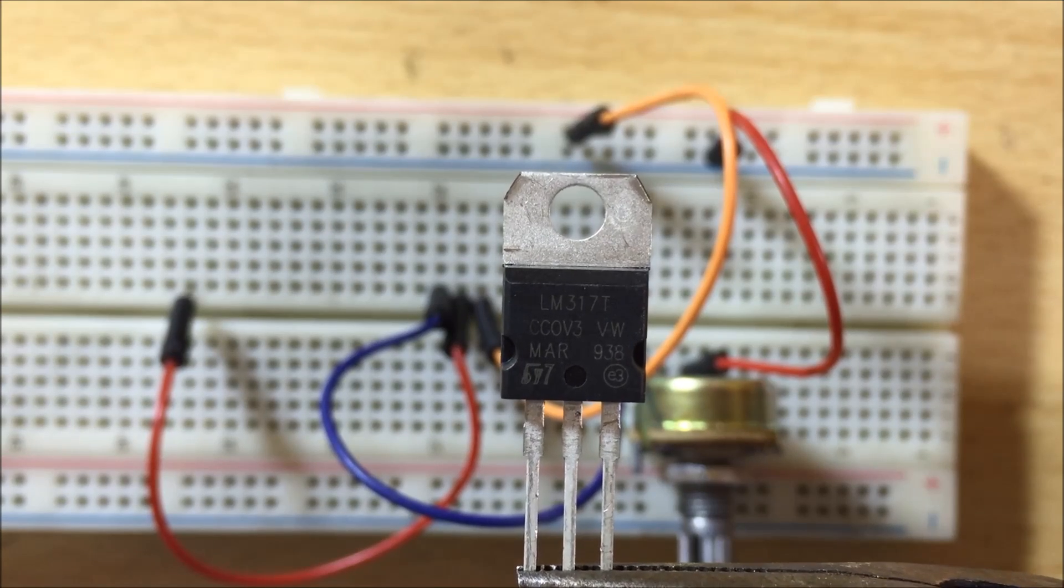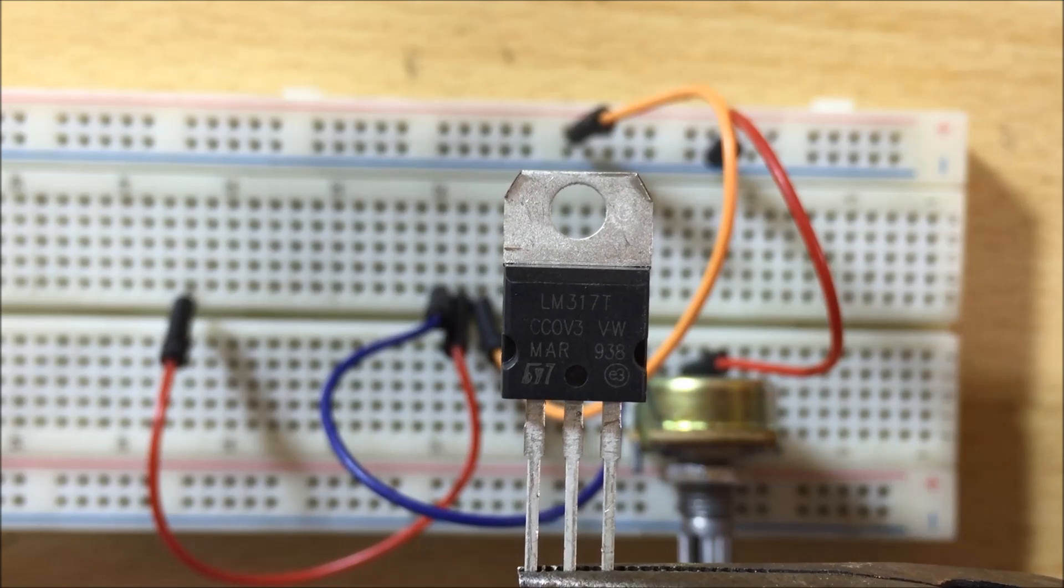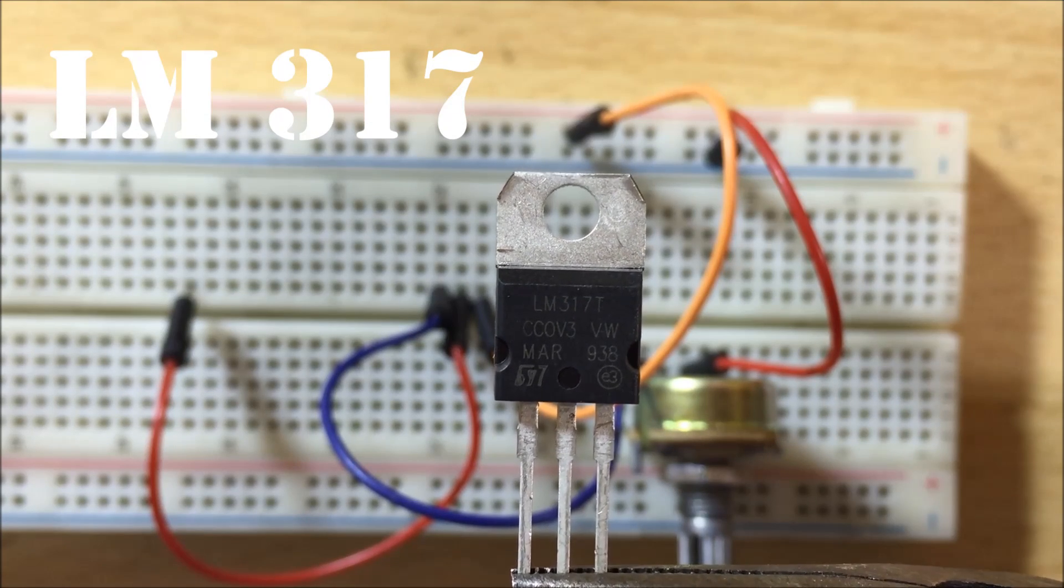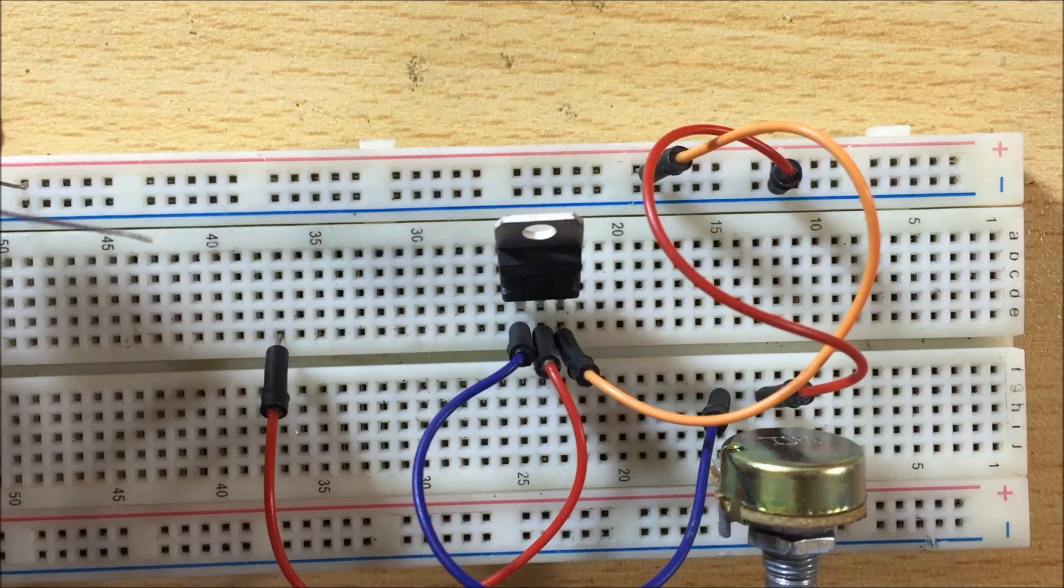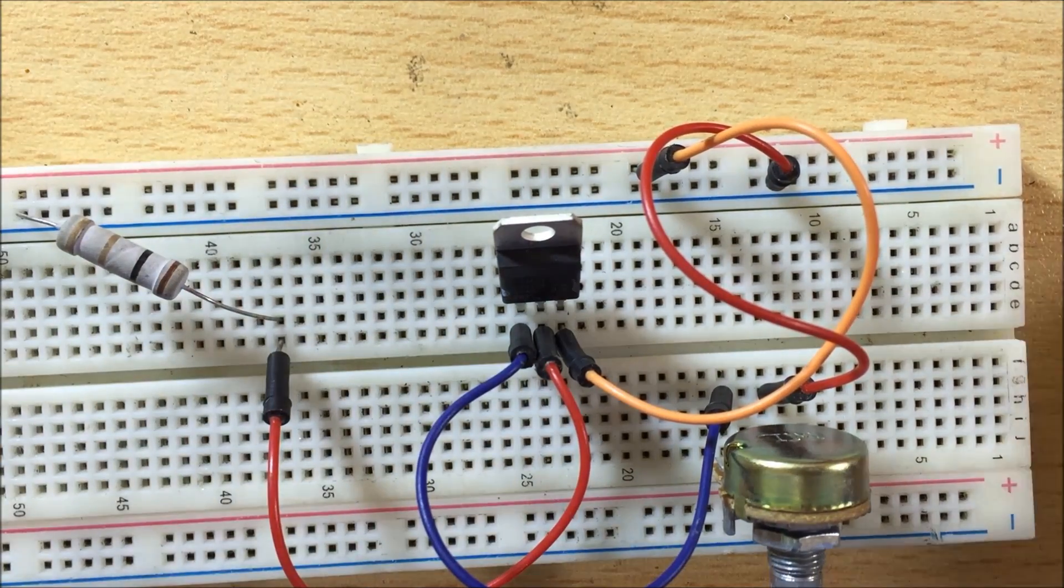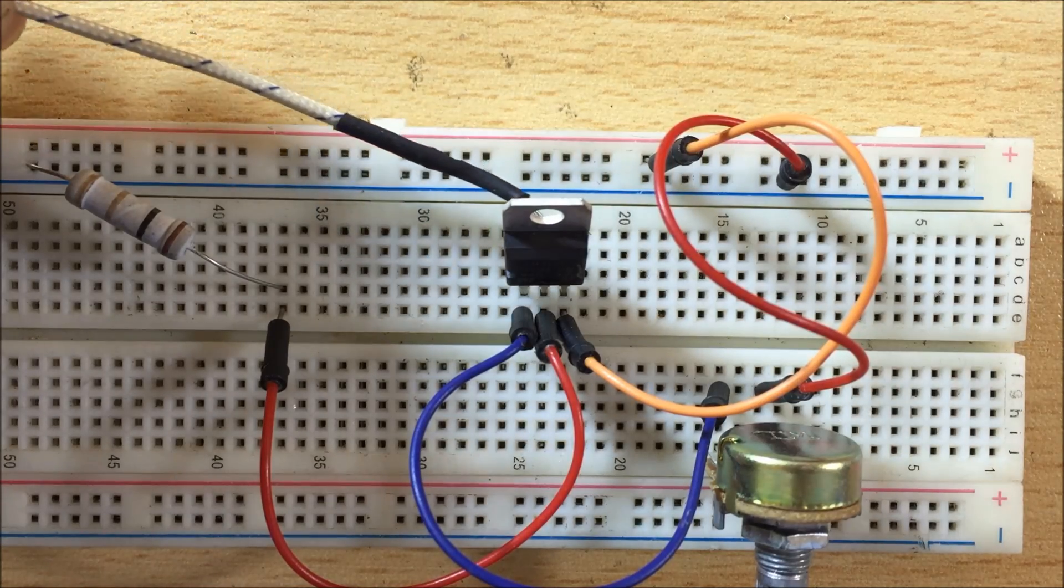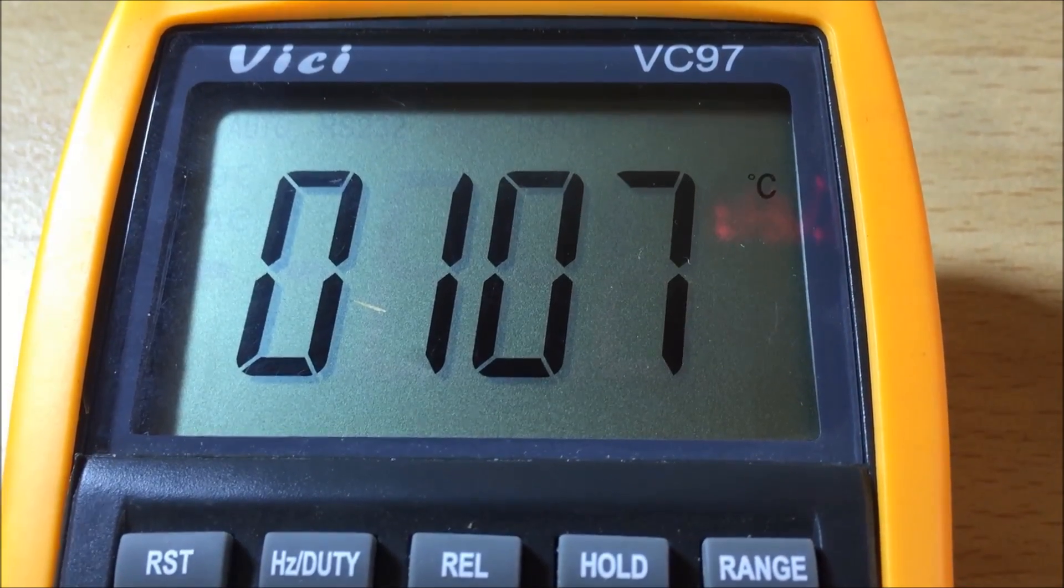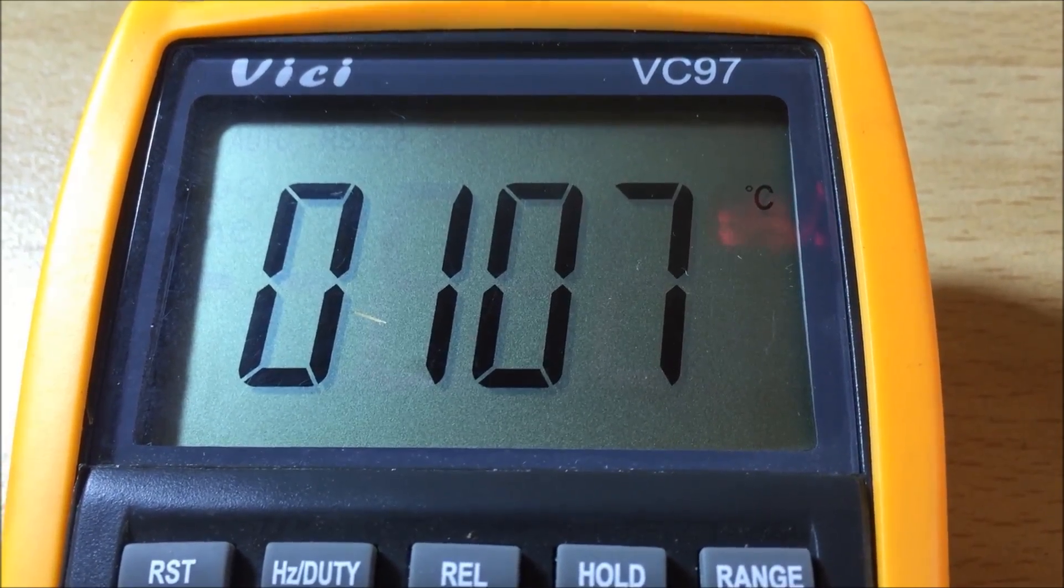For the second case I could use a linear voltage regulator like this LM317, right? Let me demonstrate. If I connect a high power load like this 10 ohm resistor, the transistor can easily reach temperature above 100 degree celsius and you might be able to see the magic smoke.